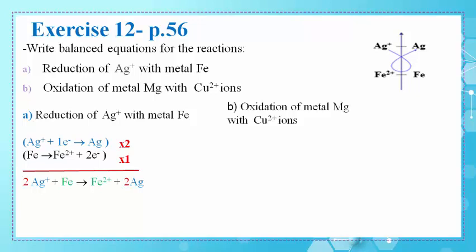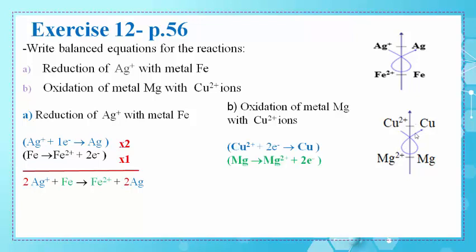In part B, the oxidation of metal Mg with Cu2+ ions: we place them on an axis. Cu2+ is the strongest oxidizing agent and Mg is the strongest reducing agent. A spontaneous reaction takes place. The half reactions are: Cu2+ + 2e− → Cu, and Mg → Mg2+ + 2e−. Since both involve two electrons, the overall equation is: Cu2+ + Mg → Mg2+ + Cu.